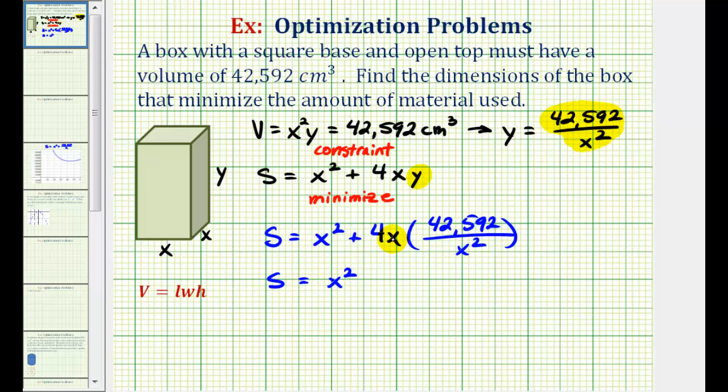If we take a look at the x's, one factor of x will simplify out. This would simplify to one, this would simplify to x to the first. And four times 42,592 is 170,368. And if we move this x to the first up to the numerator, it would be x to the power of negative one.